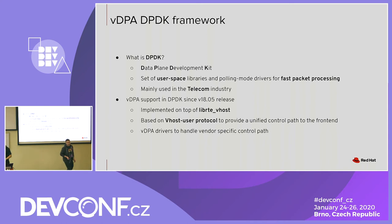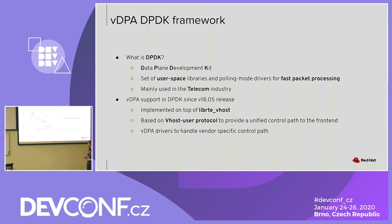Now I'll talk about the DPDK side of VDPA. DPDK stands for Data Plane Development Kit — a framework, a set of user-space libraries and poll-mode drivers used to achieve fast packet processing. The VDPA framework for DPDK was developed jointly by Intel and Red Hat and introduced in the DPDK 18.05 release. It plugs on top of the VhostUser library of DPDK and relies on the VhostUser control path to provide a unified interface to the front-end. VDPA drivers are also part of DPDK to handle the vendor-specific control path.